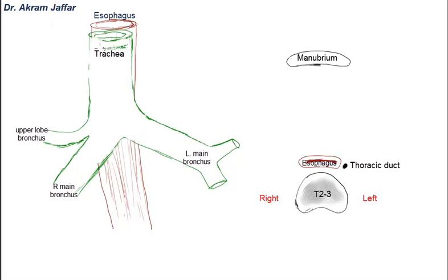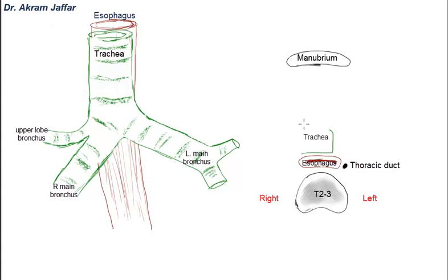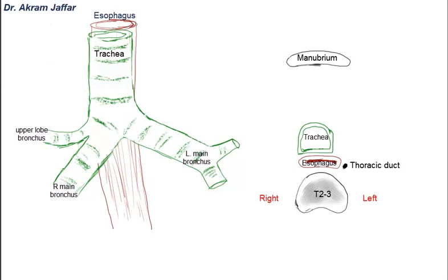The trachea has rings of hyaline cartilage that keep it always patent. In the section, the trachea lies in front of the esophagus. Its lumen is patent because of the rings of hyaline cartilage, but these rings are incomplete — they are C-shaped, deficient posteriorly, where a trachealis muscle connects the two posterior ends. In section, the trachea therefore appears flattened posteriorly. In front of the bifurcation are tracheobronchial lymph nodes, as well as the cardiac plexus of nerves.